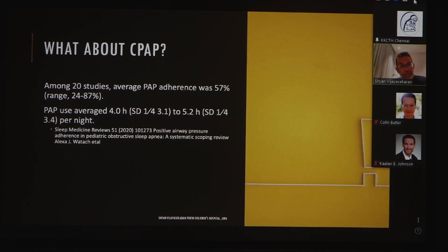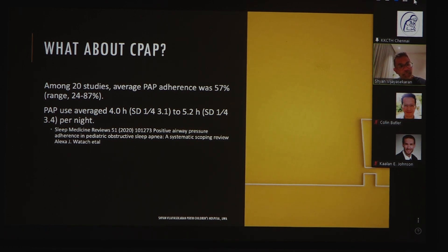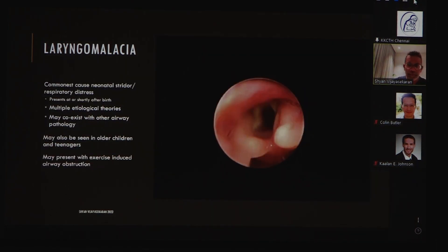CPAP is an option in patients who failed regular surgery. This meta-analysis looking at outcomes of CPAP found that adherence was around 50 to 60 percent, though the range was quite large — 24 to 87 percent. The meta-analysis suggested we should look at papers where adherence approaches 90 percent to see what adjuncts assist compliance. However, even in patients with high compliance, the average number of hours of CPAP use ranged from four to five hours, suggesting inadequate duration of PAP use even in high-compliance populations.